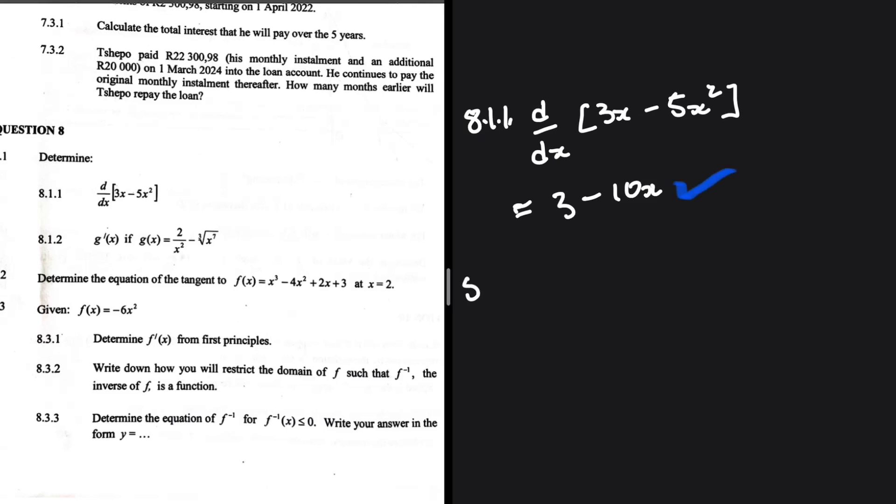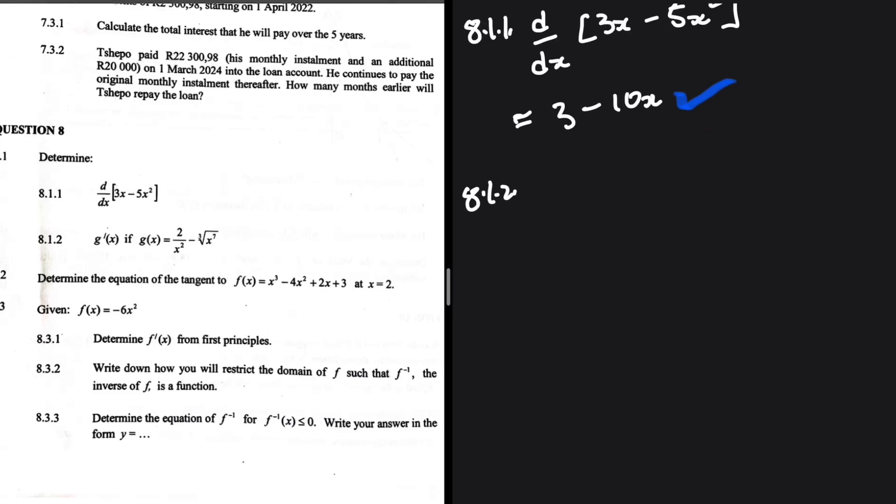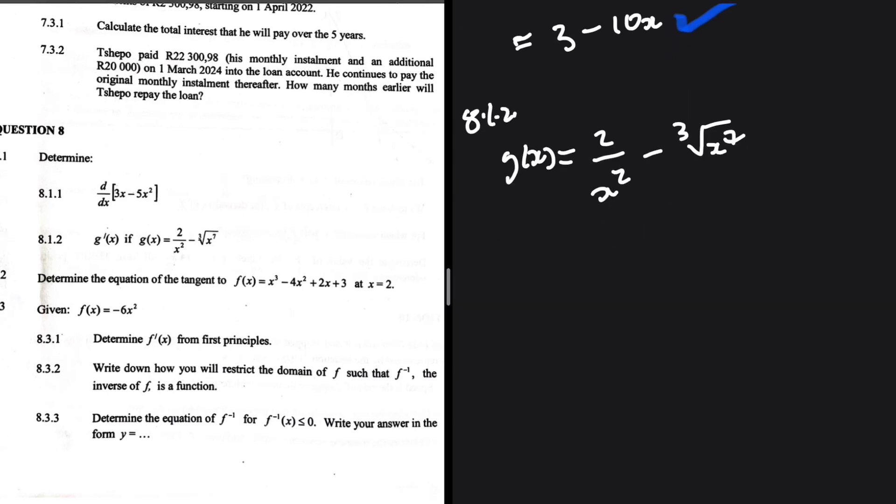And then taking a look at 8.1.2, we're supposed to find g prime of x when g of x is equals to 2 over x squared minus 3, and then we have the square root of x to the 7. So a few issues might arise here. We are not able to use the power rule when our function looks like that. So what do we do? We just rewrite it. We don't have to complicate things. What do I mean by that? Let me show you.